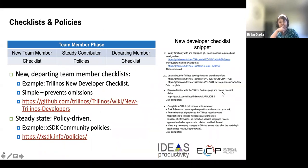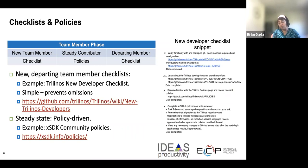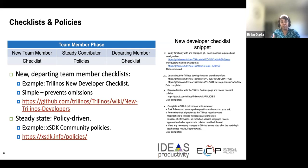One way to deal with the challenges that small teams face is to have checklists and policies in place. Checklists are essentially to-do items. On this slide you can see a new developer checklist, also called an onboarding checklist, from the Tridimus project. Having a checklist is good because you are essentially documenting the process. And if you miss anything in the process, you can improve your checklist, and in that way your process also automatically gets improved. You can have different types of checklists depending on what your team needs.